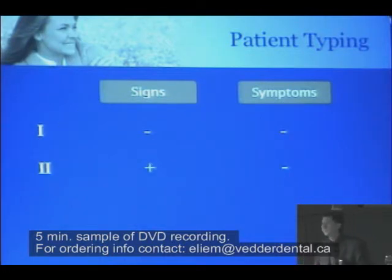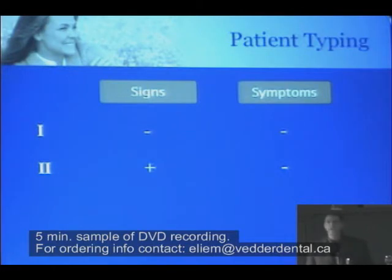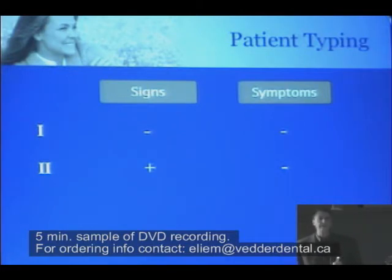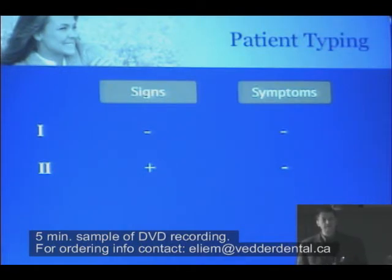A type 2 patient is a patient with positive signs and negative symptoms. I see wear, I see affractions, I see broken teeth, I see crowding, I see gingival loss. But when we inquire, they are not complaining — they have no symptoms.